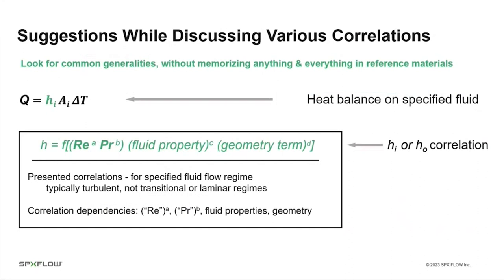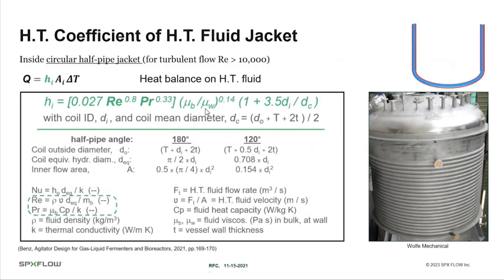Rather than memorizing specific correlations, I want you to recognize their general form: the convective heat transfer coefficient is a function of Reynolds number raised to some power, Prandtl number raised to some power, fluid property terms raised to a power, and geometry terms raised to a power. This general shape applies regardless of heat transfer surface type or which fluid is being considered. Keep that form in mind as we work through the specific correlations.